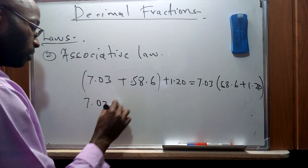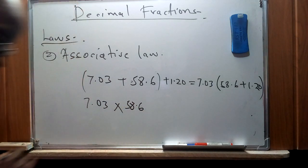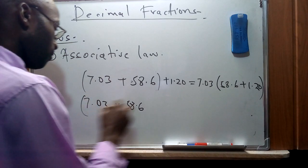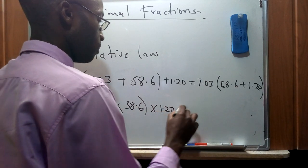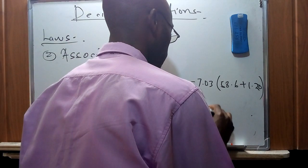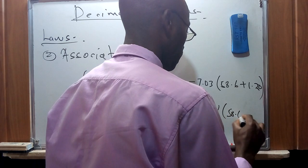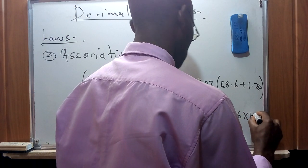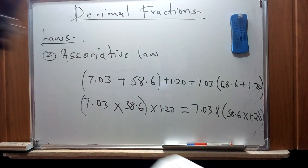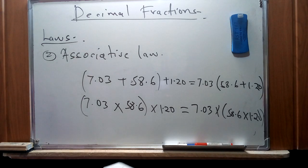For a product, the associative law also holds: (58.6 × 1.20) applied with 7.03 can be expressed as 7.03 × (58.6 × 1.20). This illustrates that decimal fractions obey the associative law of arithmetic operations. The third and last law we will look at is the distributive law.